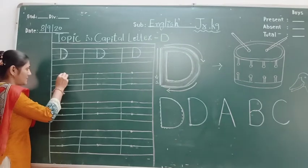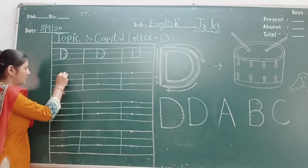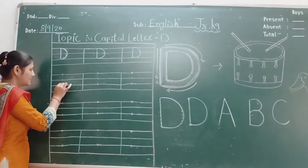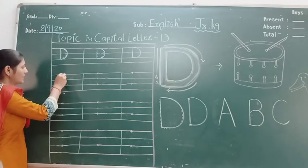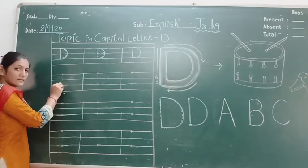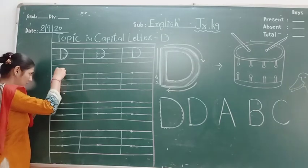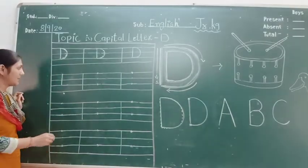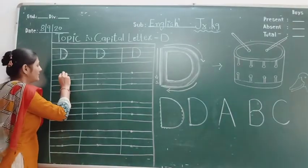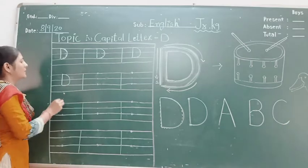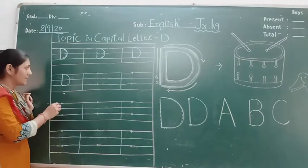Students, see here — one row and second row. One board and second one. Join the two rows. Make a standing line and curve line. Make a capital letter D.